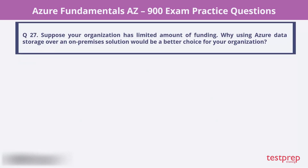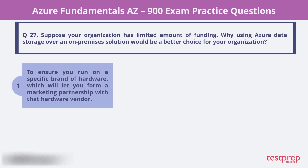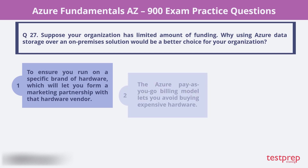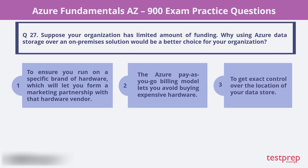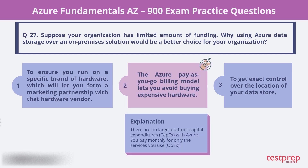Question 27. Suppose your organization has a limited amount of funding. Why would using Azure Data Storage over an on-premises solution be a better choice? To ensure you run on a specific brand of hardware which will let you form a marketing partnership with that hardware vendor, the Azure Pay-as-you-go billing model lets you avoid buying expensive hardware, or to get exact control over the location of your data store. The correct choice is 2. There are no large upfront capital expenditures with Azure. You pay monthly for only the services you use.